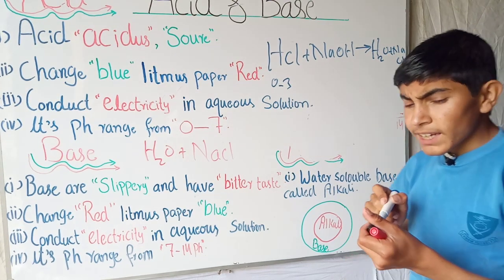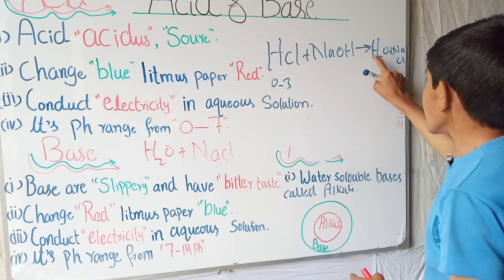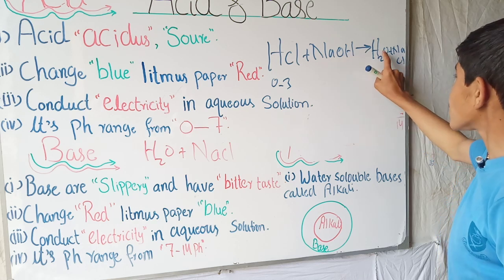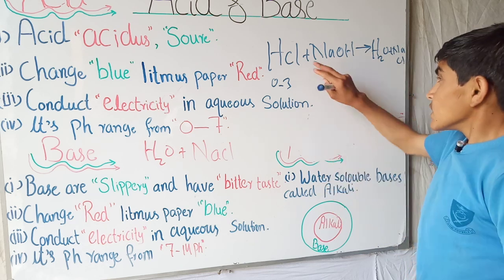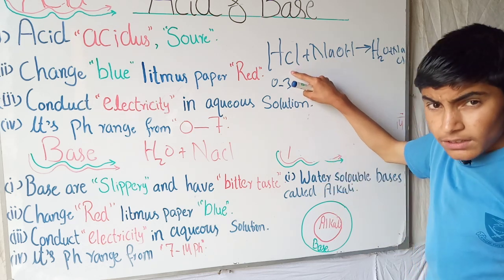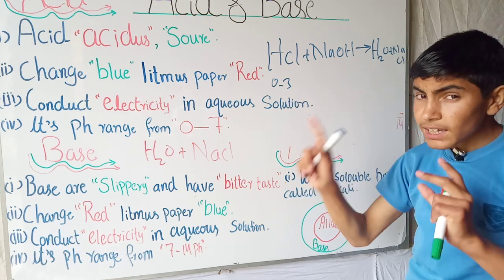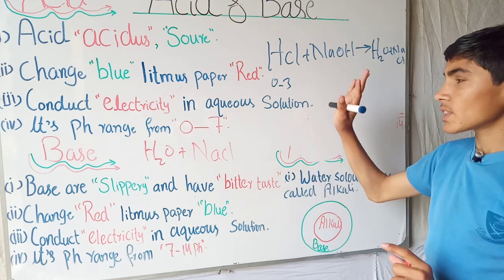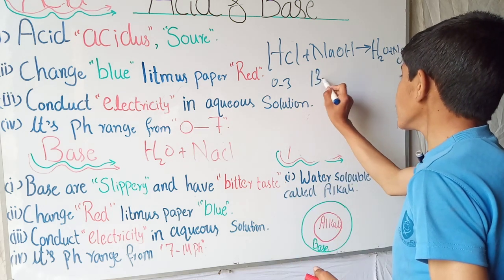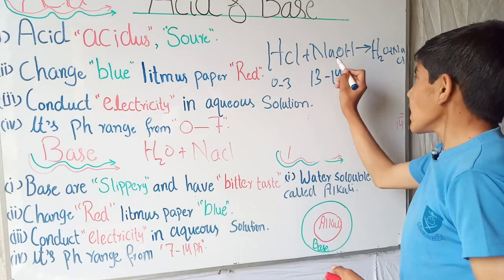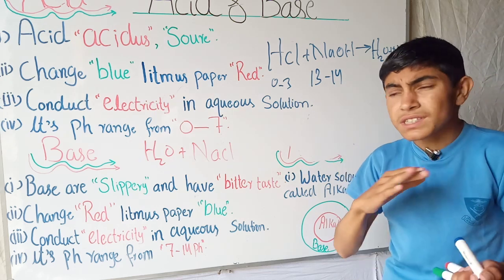We can prepare table salt by this method: HCl plus NaOH gives H2O plus NaCl. The strongest acid plus the strongest base gives us neutral things. Sodium hydroxide is used for cleaning ovens.